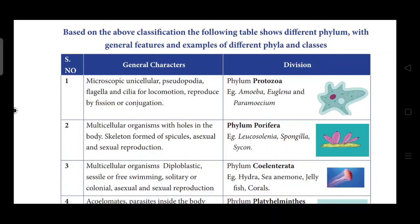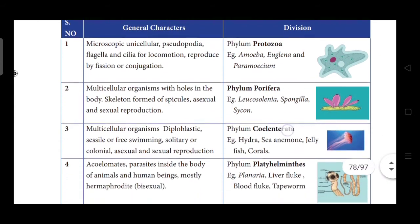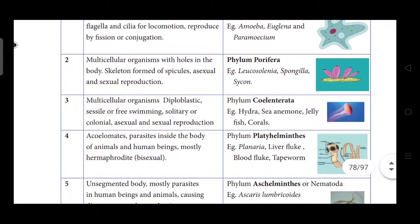In our previous class we started discussing the general characteristics of the animal kingdom sub-kingdom Invertebrata. The Invertebrata consists of nine phyla. Among the nine phyla we discussed the first three: Protozoa, Porifera, and Coelentrata. Now we are going to discuss the fourth phylum: Platyhelminthes.